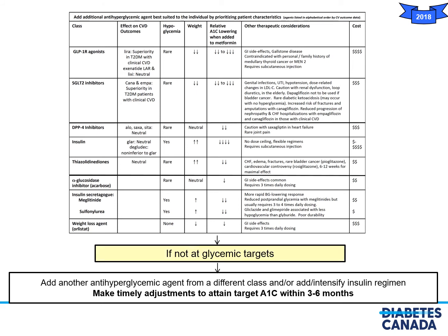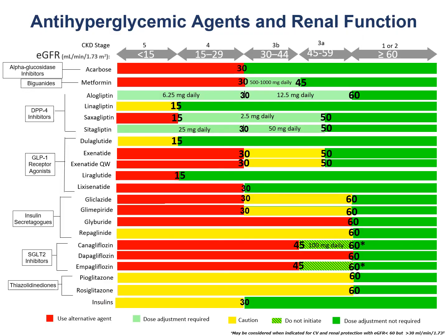If a patient is not at glycemic target after the use of one of the agents shown above, you should add another antihyperglycemic agent from a different class and/or add or intensify insulin therapy. It's important to make timely adjustments to obtain target A1c values within three to six months. This slide shows the adjustments needed for antihyperglycemic agents based on renal function, and the table should be reviewed prior to beginning any antihyperglycemic agent in an older person.